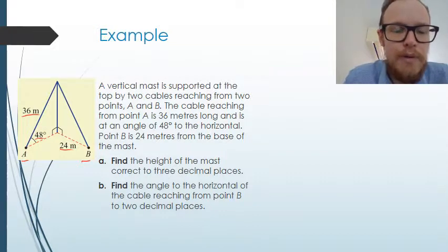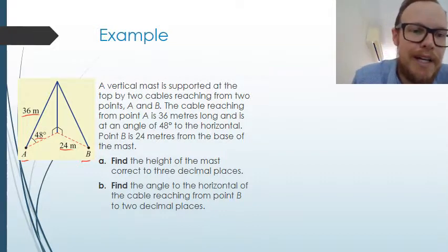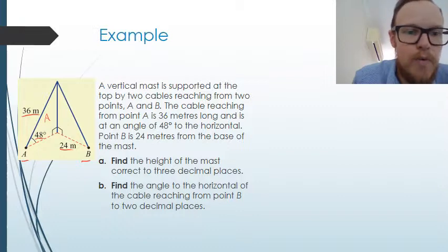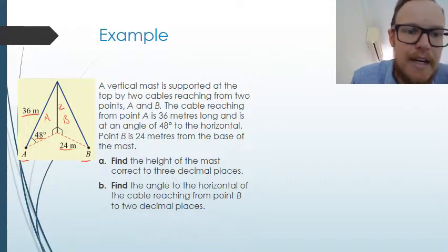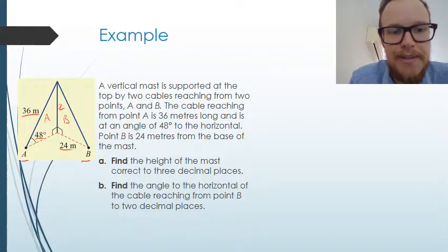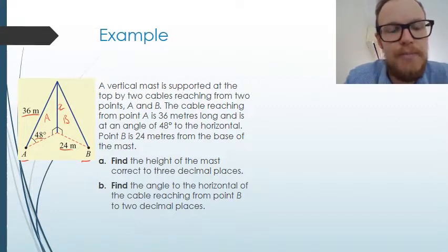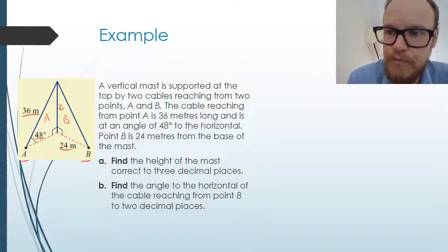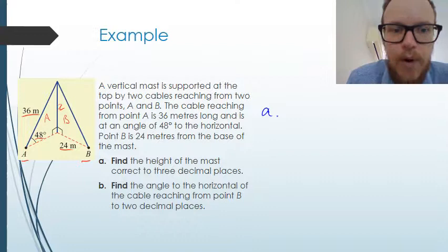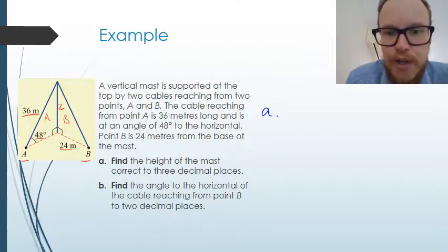If we tried to work it out using the first triangle here, the A triangle here, we've got enough information to do that. If we tried to work out the height of the mast here, we'll call it X, using triangle B we've only got one piece of information, the 24 meters, which is not enough to actually solve the problem. So we need to use triangle A. In order to answer part A what we need to do is we need to draw triangle A.